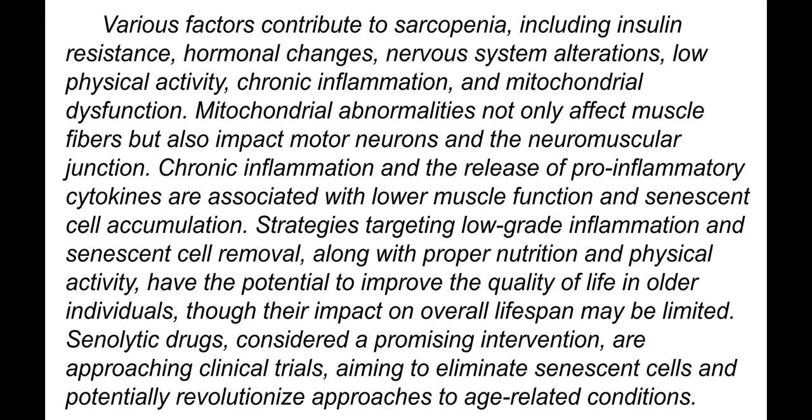Various factors contribute to sarcopenia, including insulin resistance, hormonal changes, nervous system alterations, low physical activity, chronic inflammation, and mitochondrial dysfunction. Mitochondrial abnormalities affect not only muscle fibers but also motor neurons and the neuromuscular junction. Chronic inflammation and the release of pro-inflammatory cytokines are associated with lower muscle function and senescent cell accumulation. Strategies targeting low-grade inflammation and senescent cell removal, along with proper nutrition and physical activity, have the potential to improve quality of life in older individuals.